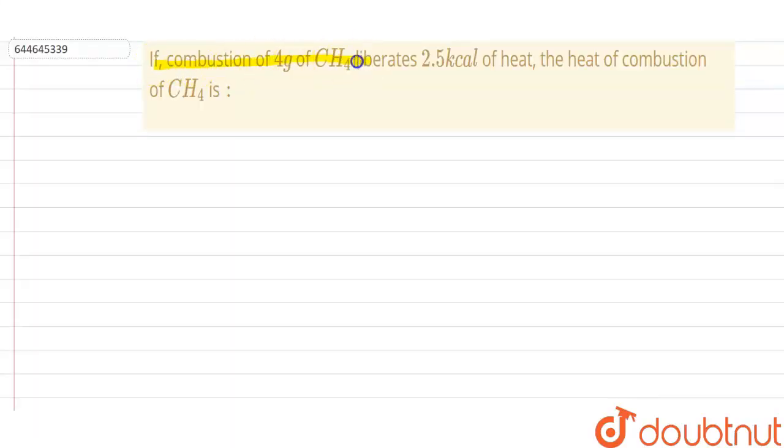If the combustion of 4 gram of methane liberates 2.5 kilocalorie of heat, then we have to find the heat of combustion of methane. So first of all, we have to know what is the heat of combustion.